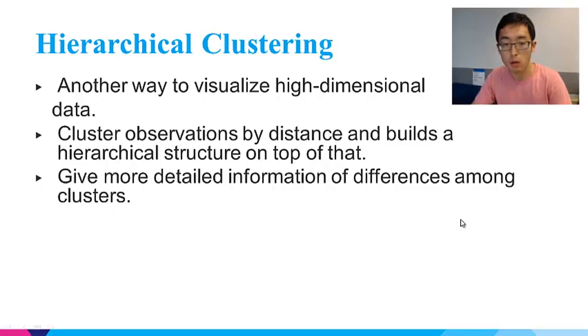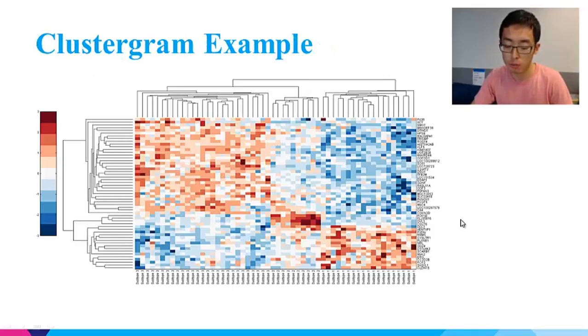For example, it can tell you which genes contribute the most to the difference between two clusters. Here is an example of a hierarchical clustergram. It is made of a heat map in the middle, dendrogram on the left and top, and row and column labels on the right and bottom. There is also a scale bar on the left.